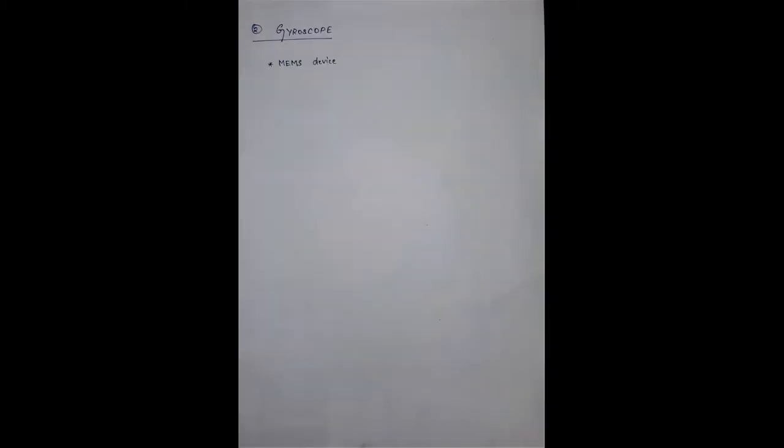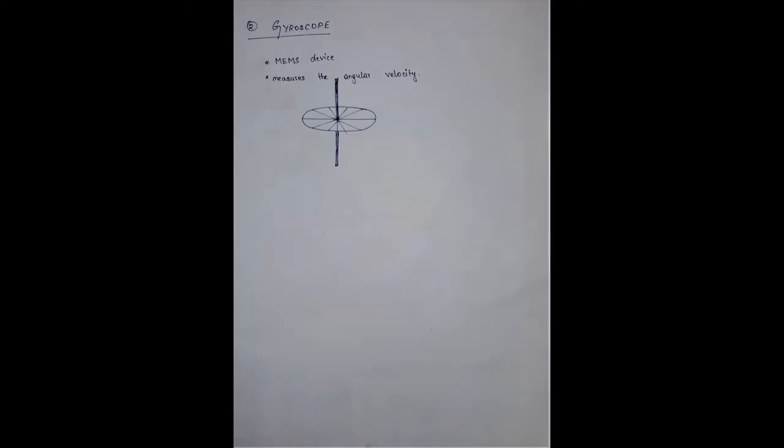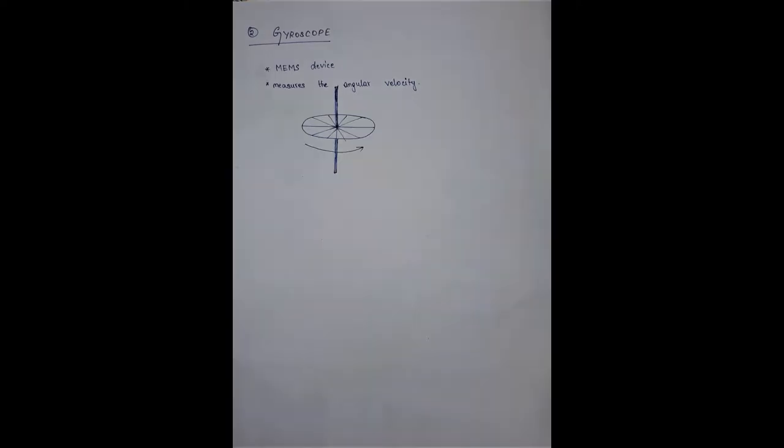Next, let's move on to the gyroscope. A gyroscope is a device that measures the angular velocity. Even this is a MEMS device. Take for example, a cycle wheel. This wheel is hung from the top in one axis. When this wheel is rotated in this direction, the angular velocity can be obtained.